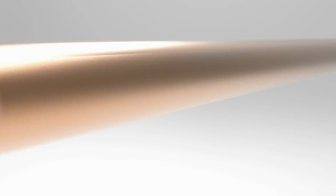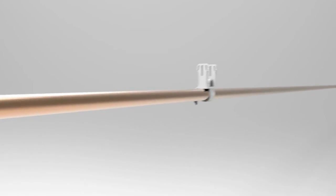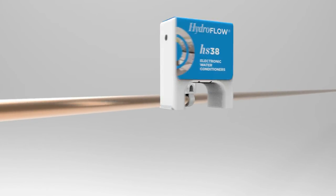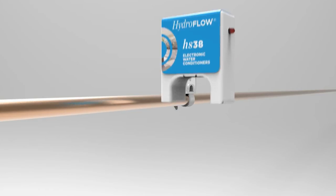Limescale clings to the surfaces of pipes and the heating elements of boilers, reducing their efficiency and eventually causing them to be replaced. Now there is a solution, the HS38.